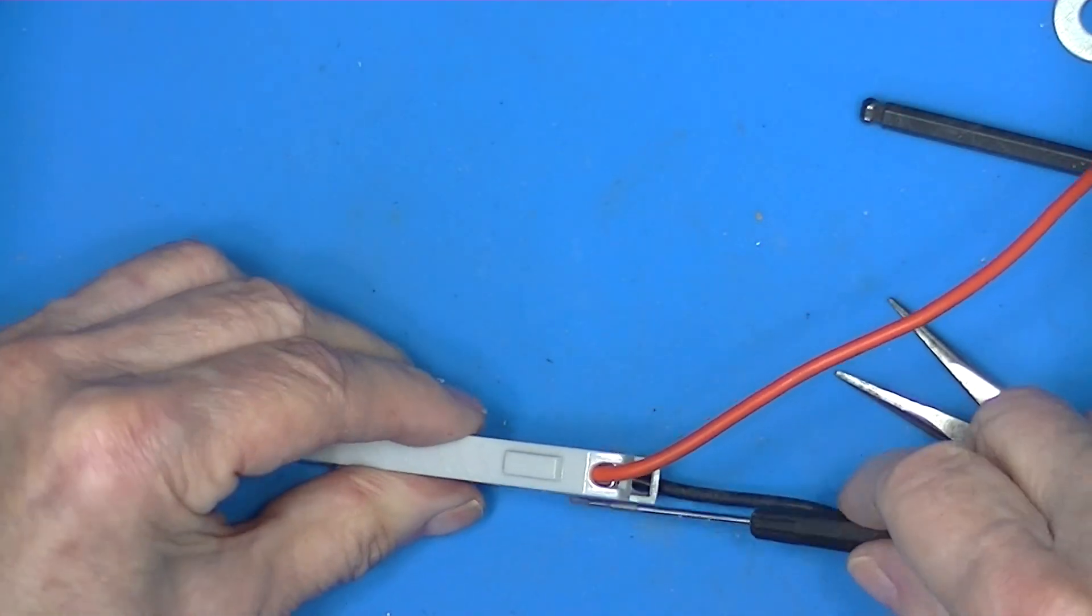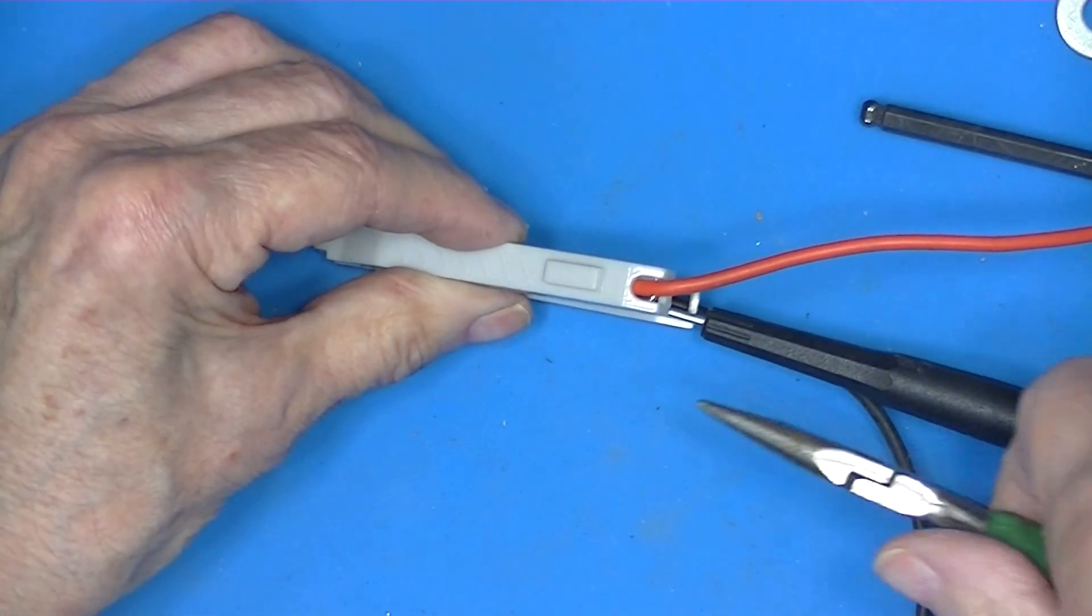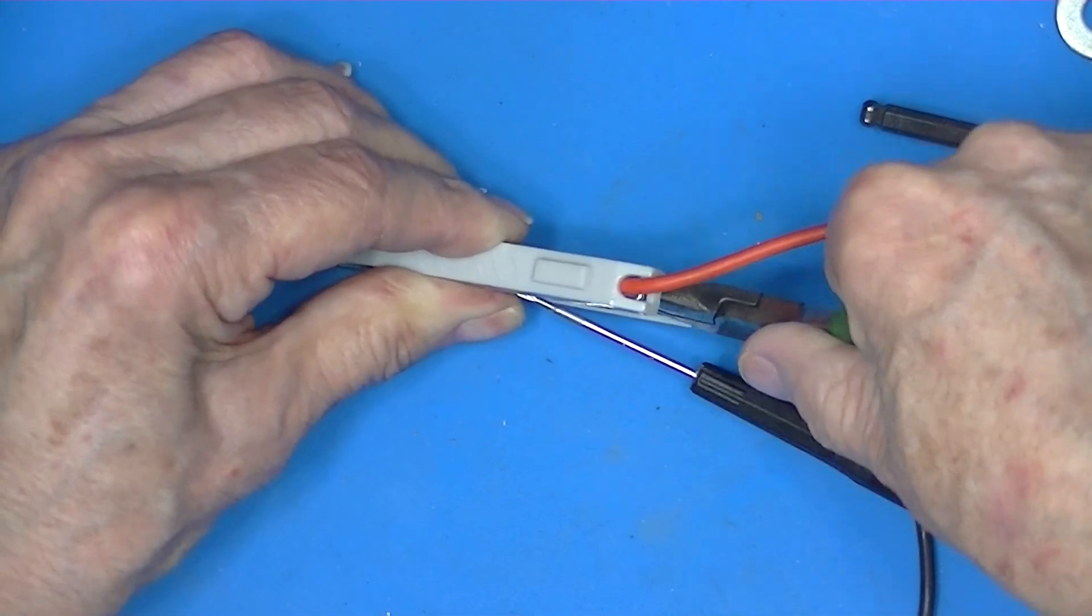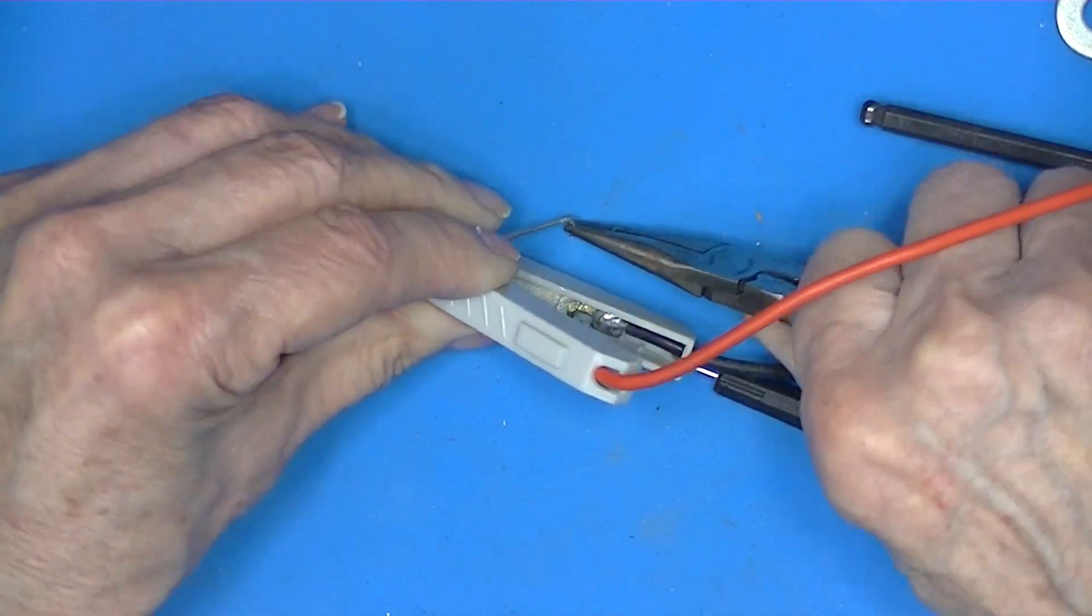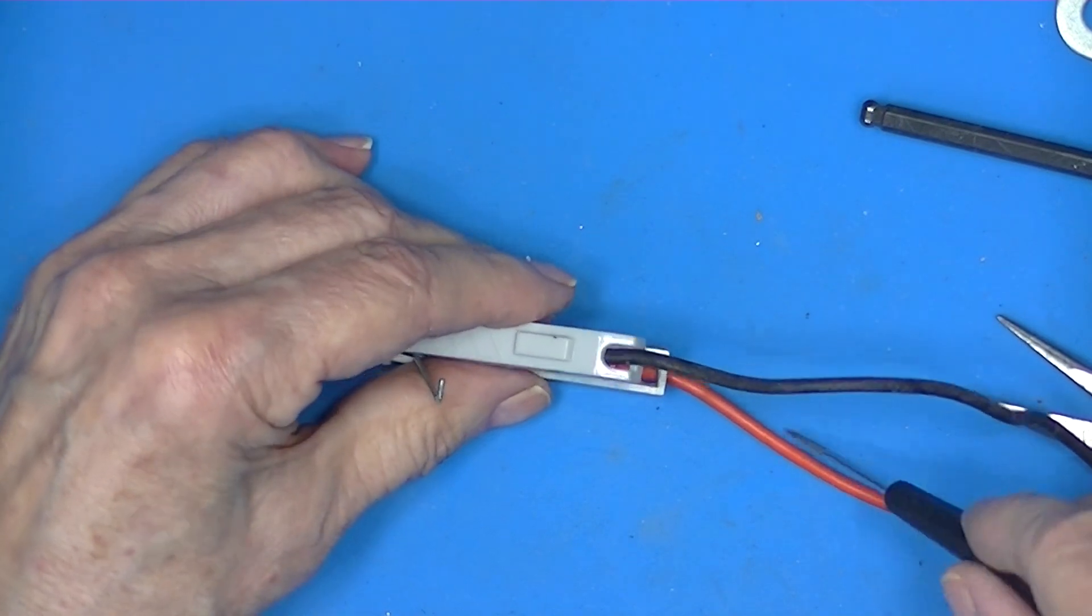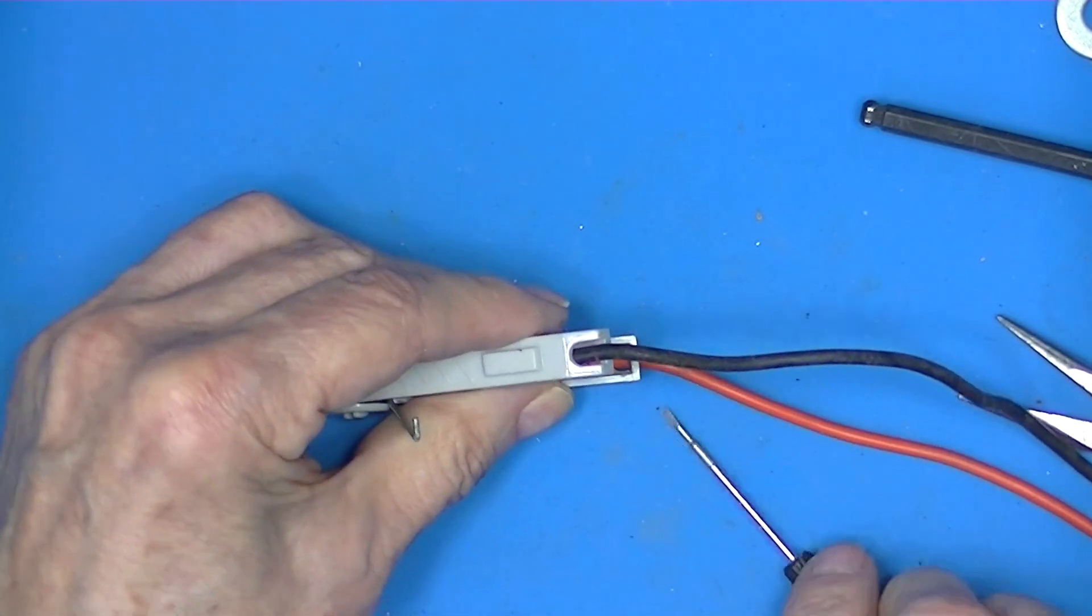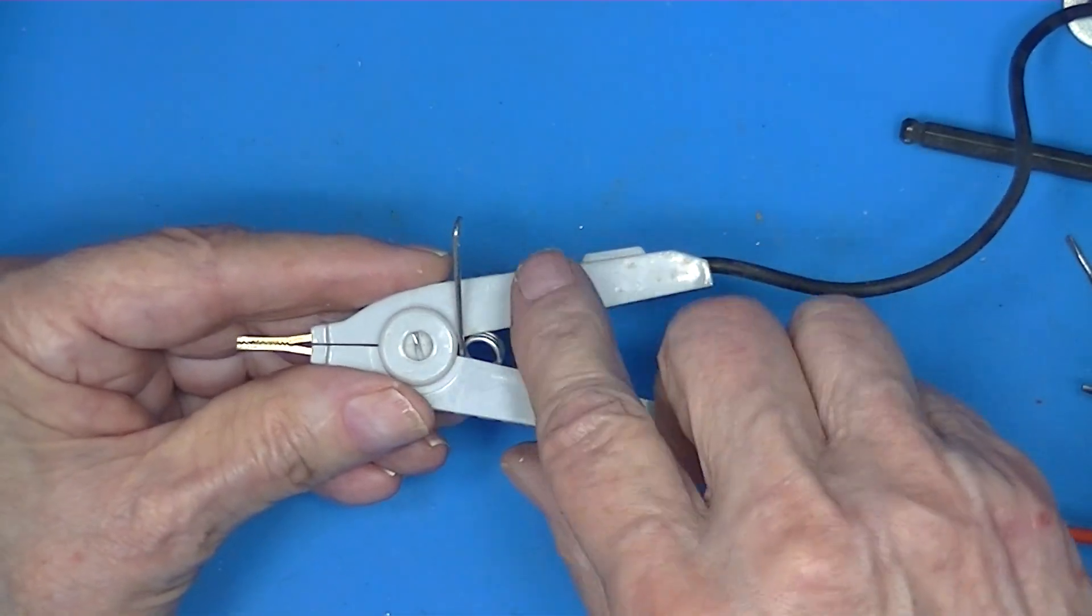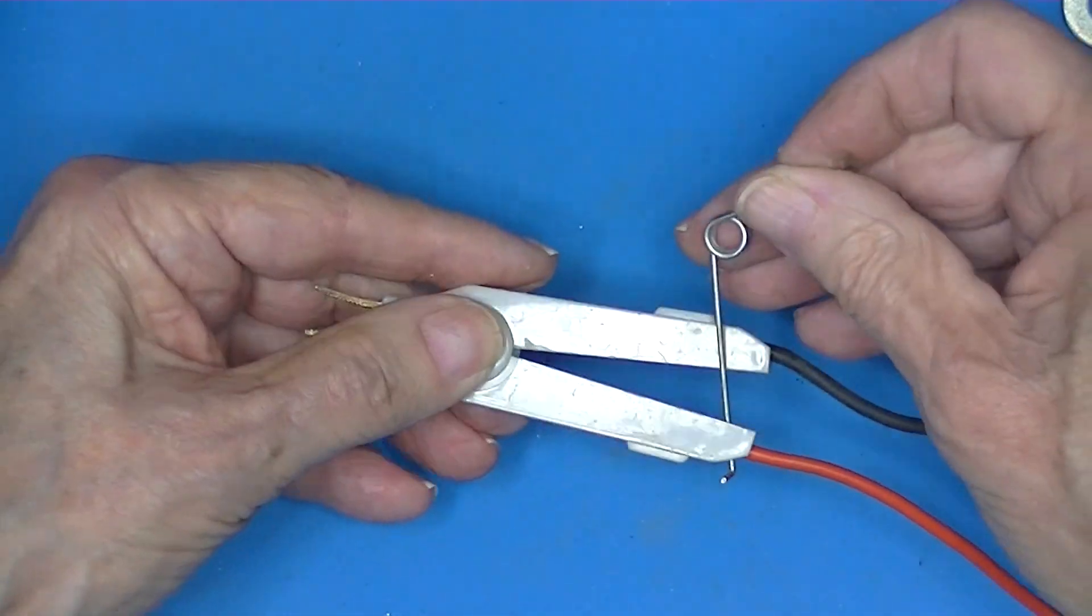I'll do that again to make sure it's on camera this time. There we go, so you flip it over the side. Then we'll do the same thing with the other spring. So now we've got the spring moved out from the center.